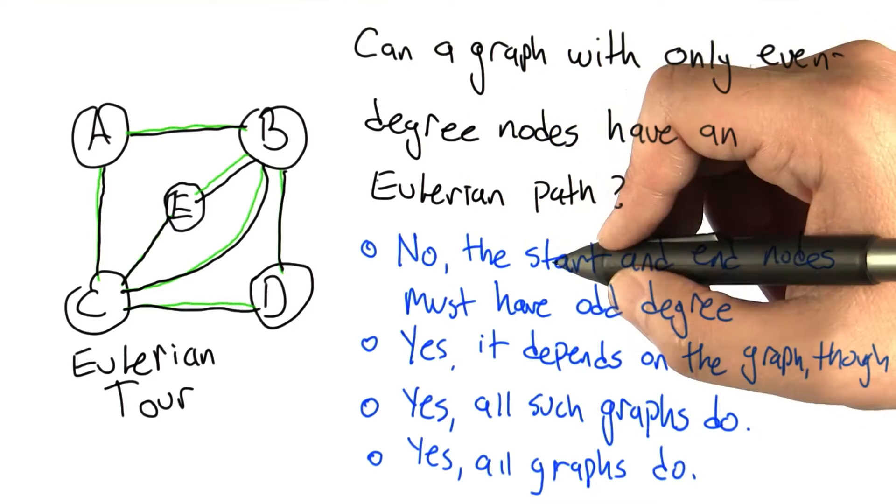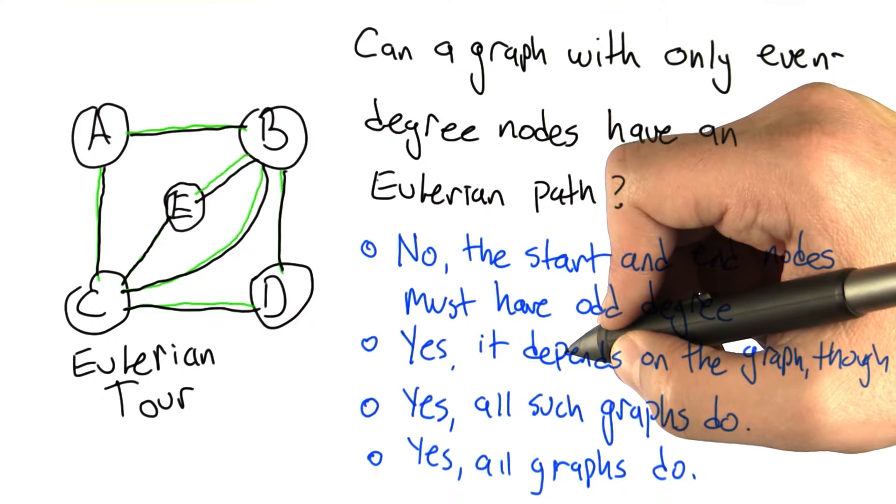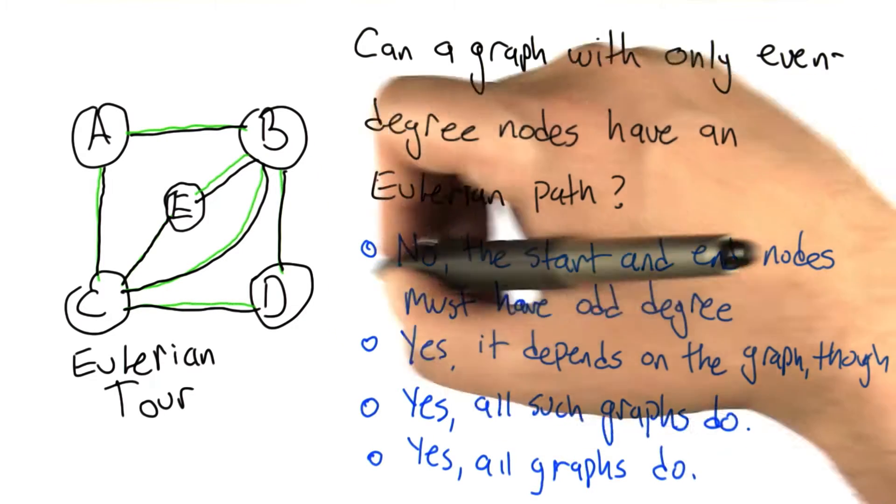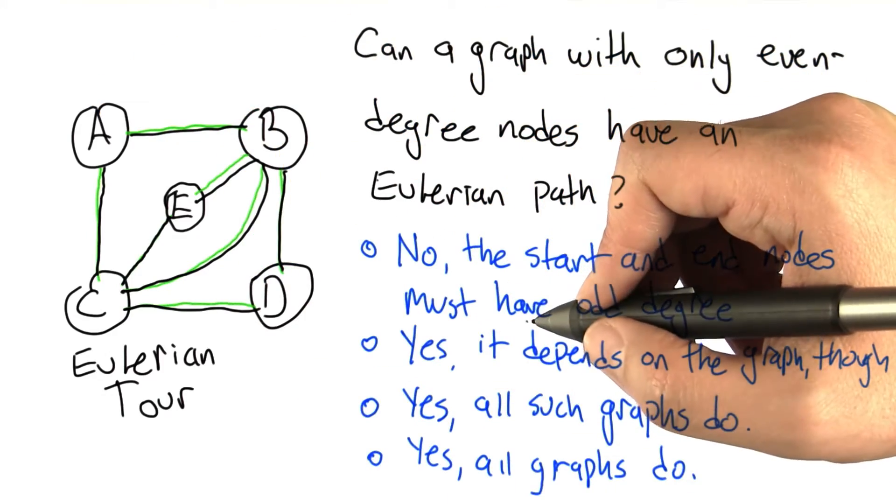This first answer is definitely not correct. Such a graph can have an Eulerian path. No, it doesn't depend on the graph. It turns out that this is going to be fine no matter what, because we're going to end up starting and ending at the same node. And we could have actually started and ended on any of the nodes, and it would have worked out the same way.